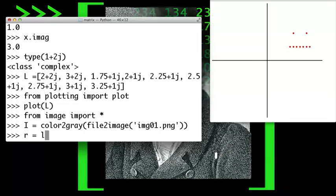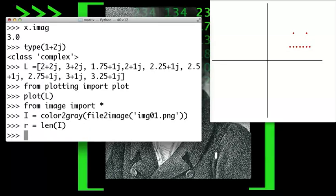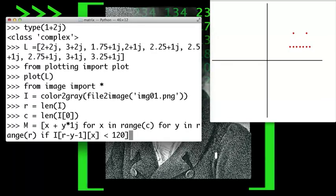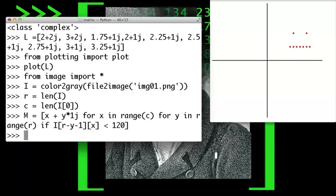Now we find the length of this list, which is the number of rows, and the length of one of its elements, which is the number of columns. Now we'll define a collection of complex numbers based on the intensities of the pixels in the image, and plot that.